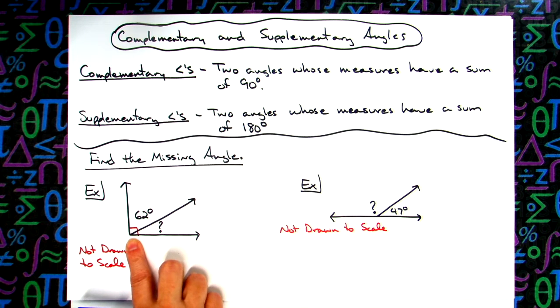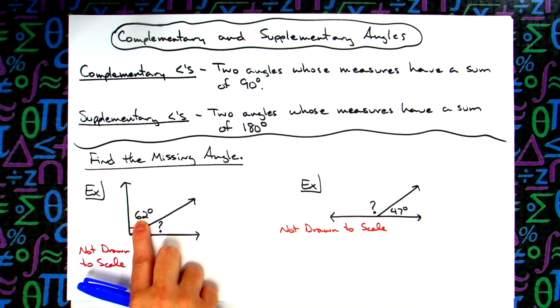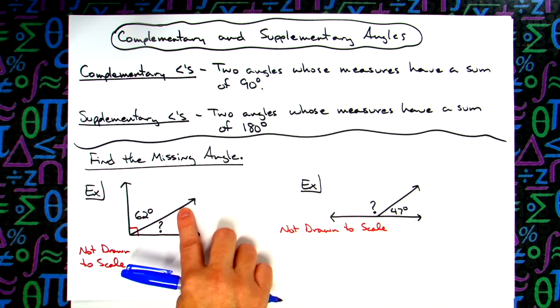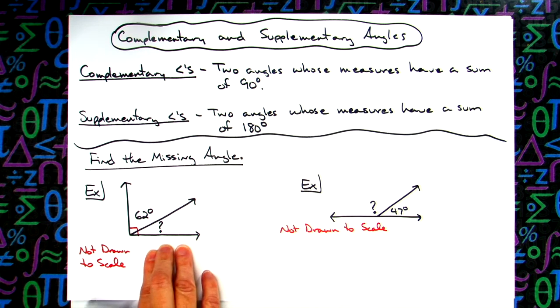Obviously examples are not drawn to scale, but let's just assume that this is a right angle. You can see the little right angle is marked there. If this angle is 62 degrees, your job is to find the missing angle right here.